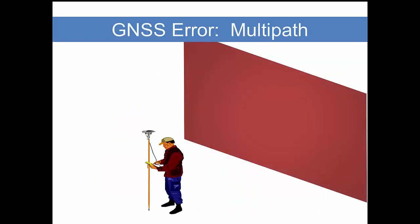Multipath error is also very significant. We have to be careful around buildings especially. What happens? Well, when we're receiving signals here, we will get signals directly from the satellites, but other signals will reflect off of those vertical surfaces and give us bad data.